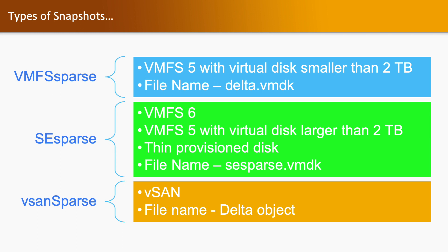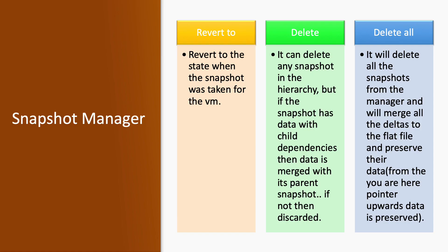Types of snapshots depend on the datastore you are using in your virtual environment. If you are using VMFS 5, the snapshot type will be VMFS Sparse and the file name will be delta.vmdk. If you are using VMFS 6 or VMFS 5 larger than 2TB, the snapshot type will be SE Sparse and the file name will be sesparse.vmdk. If you are using a vSAN environment, the snapshot type will be vSAN Sparse and the file name would be a delta object.